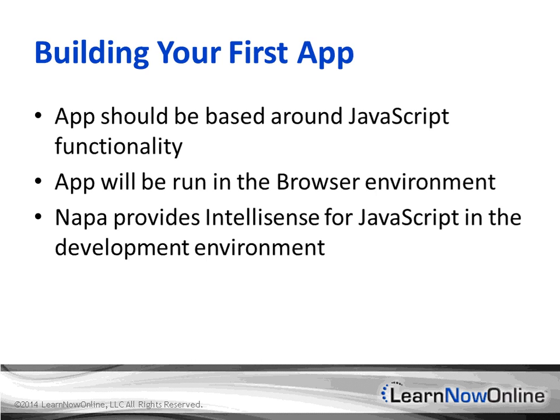Napa provides IntelliSense for JavaScript in the development environment. If you're used to being a C# or VB.NET developer in Visual Studio, you'll know how much IntelliSense helps. Now you've got it in JavaScript as well — without having to install all of Visual Studio. You drop in, start typing away, get those objects, and start pulling it back in. Very useful, especially for a dynamic language like JavaScript. It helps you figure out what's going on in the model and how you bring in all this information.